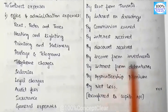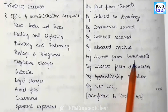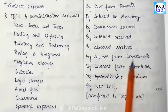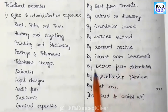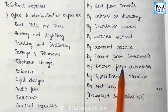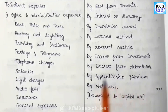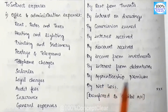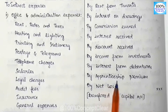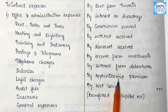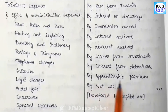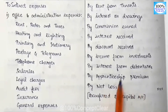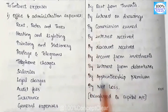Also on the credit side: discount received — if we purchase goods and pay promptly in cash, we receive a discount, which is income. Income from investment — if we have investments, we receive annual income. Interest from debentures is also income. Apprenticeship premium — when we charge for apprenticeship training, we receive that premium as income on the credit side.